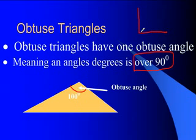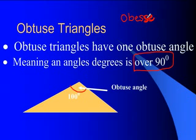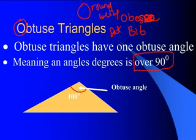Remember, if 90 degrees is the mark, any angle past that is obtuse. When I think of obtuse, I think of it as almost like 'obese,' meaning big. I also think of the O in obtuse as a round belly, which means big. So obtuse means really, really big — over 90 degrees.